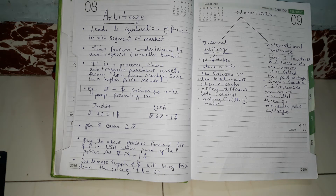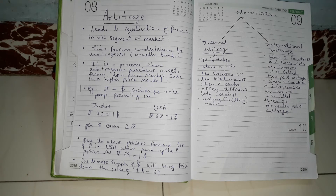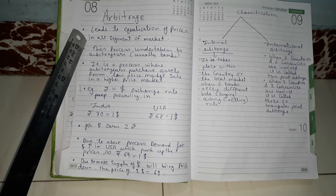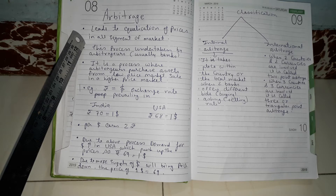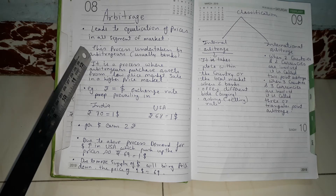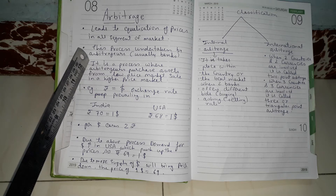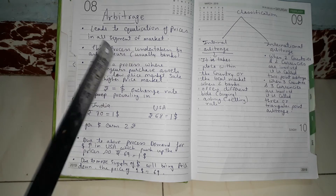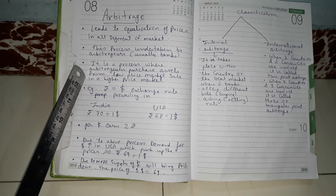Our next topic is arbitrage. Arbitrage is a process used to equalize prices in all segments of the market. On the international market, the arbitrage process is used for equalization of prices. This process is undertaken by arbitrators, who are usually banks.